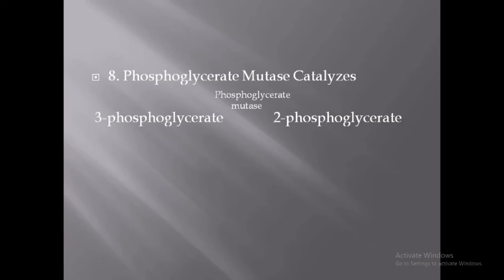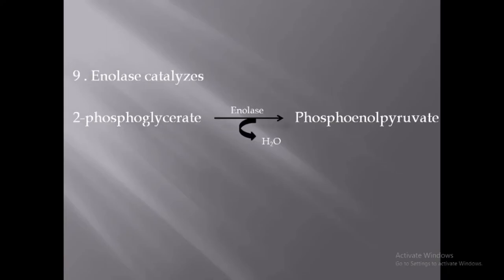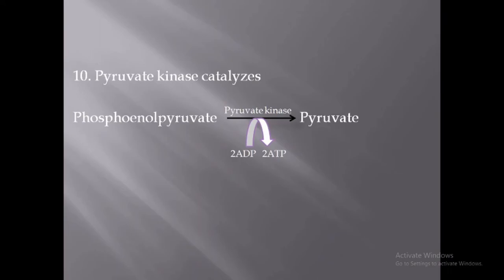The eighth step is the conversion of 3-phosphoglycerate to 2-phosphoglycerate with the help of the enzyme phosphoglycerate mutase; this reaction requires magnesium ion or manganese ion. The ninth step is the conversion of 2-phosphoglycerate to phosphoenolpyruvate with the help of the enzyme enolase, which also requires magnesium ion or manganese ion and is inhibited by fluoride.